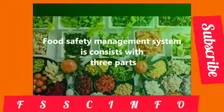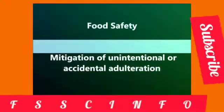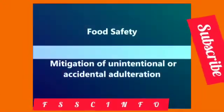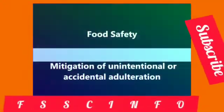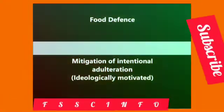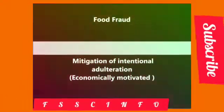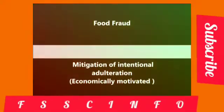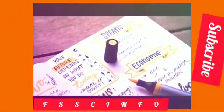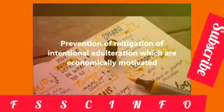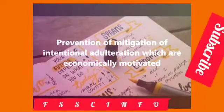The three parts are: food safety — mitigation of unintentional accidental adulteration; food defense — mitigation of intentional adulteration; and food fraud — mitigation of intentional adulteration that is economically motivated. Here we are going to discuss about prevention and mitigation of intentional adulteration which is economically motivated.